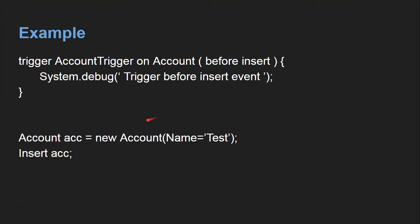Here is a simple example I'm going to implement in the org. The trigger name will be 'AccountTrigger', on the Account object, and it will run on before insert. As an example, I'll put a System.debug statement, so this message will be available in the debug logs. This trigger will fire whenever we create an account record.